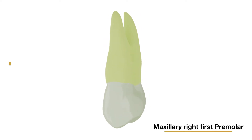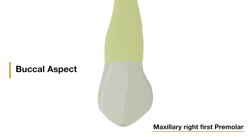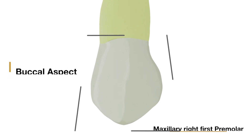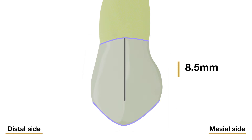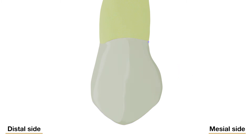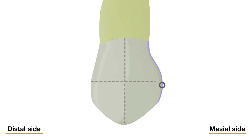Now let us start with the buccal aspect of the maxillary right first premolar. From the buccal aspect, the crown is roughly trapezoidal. Length of the crown cervico-occlusally is 8.5 mm, which is shorter than that of the canine by 1.5 to 2 mm. Moving on to the mesial outline of the crown, which is slightly concave from the cervical line to the mesial contact area. The contact area is represented by a relatively broad curvature, the crest of which lies immediately occlusal to the halfway point from the cervical line to the tip of the buccal cusp.